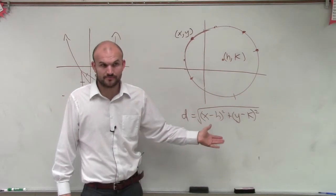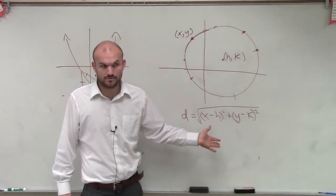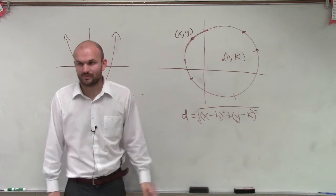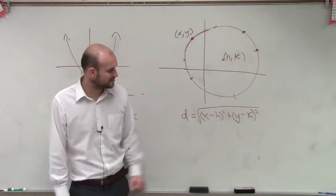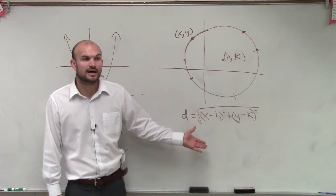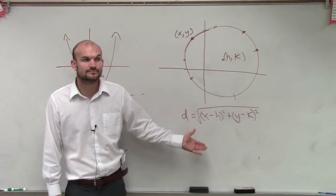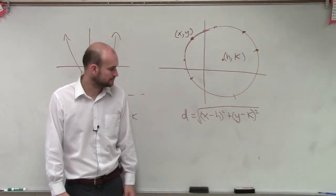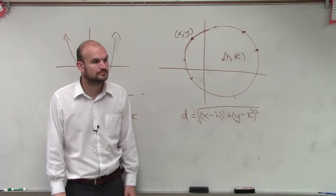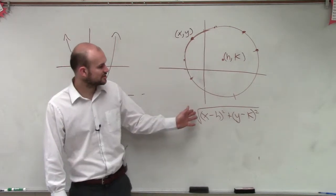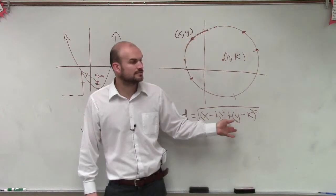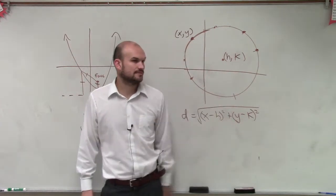Do you guys remember the distance formula? No? OK, we can go back and explain the distance formula. A student asks: why is the square root of x squared also true — can't you just choose x minus h plus y minus k? Because the square root doesn't distribute across addition — you can't just cancel those out.